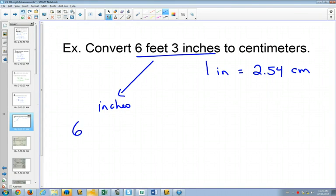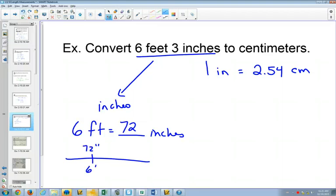So first of all, were you able to figure out that 6 feet is how many inches? 72. If you think of your tape measure, and here you'd be at 72 inches, which is 6 feet. If you went 3 more, 6 foot 3 inches is 75 inches.